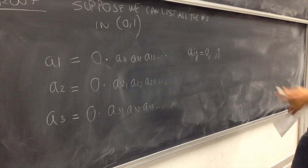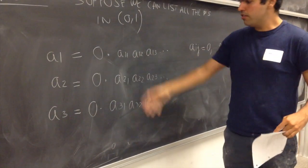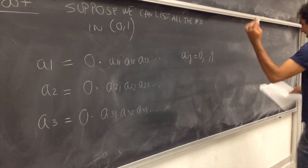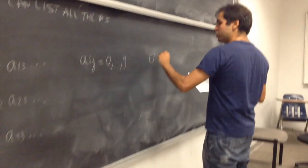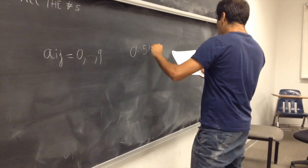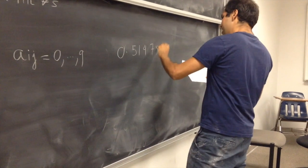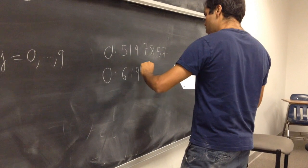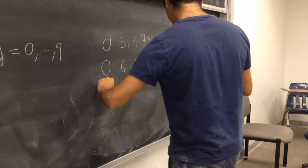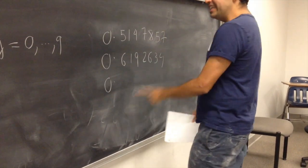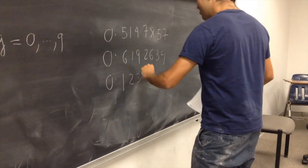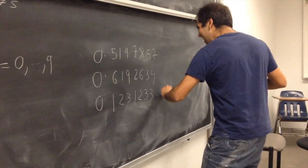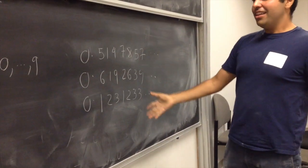So, let me give you a concrete example, because whenever I see double indices at Alma, that automatically fall asleep. So, let me give you, for example, let's just list them, 514, 7857, 0.619, 263, 4, 0. And that's Sia's number, 1, 2, 3, 1, 2, 3, 3, 1, 2, 3, 1, 2, 3, 3, okay?